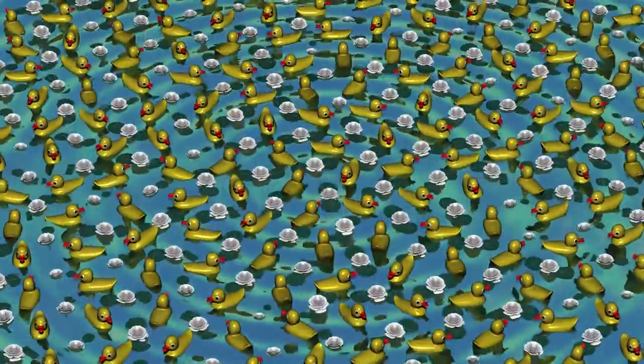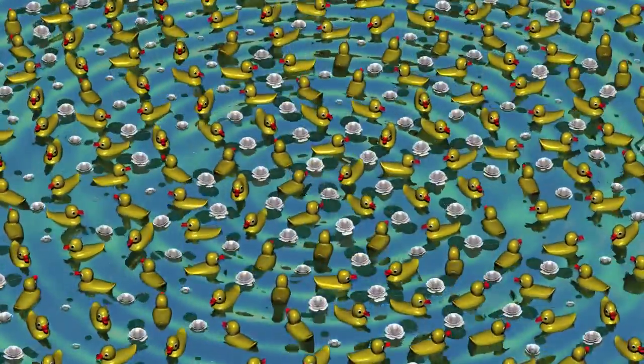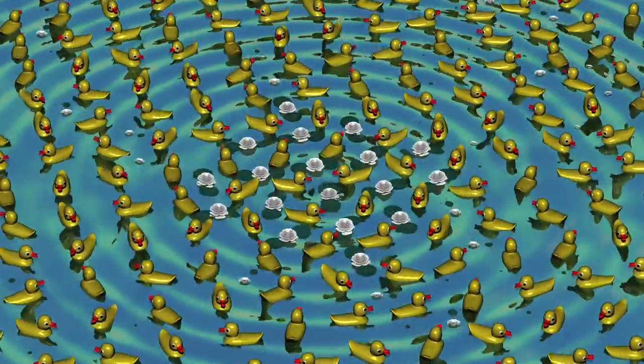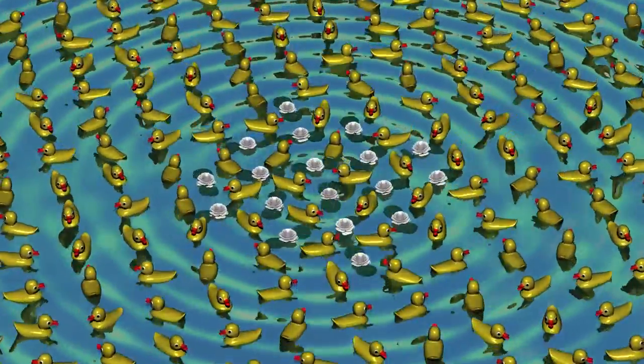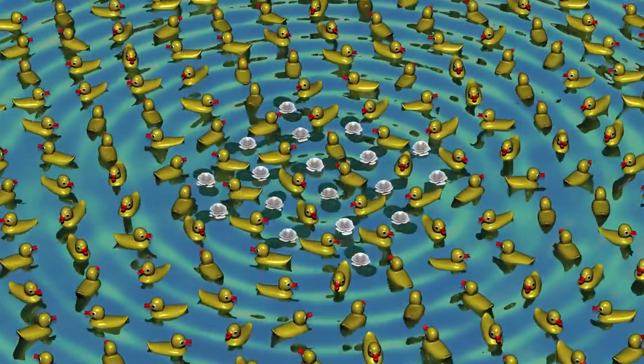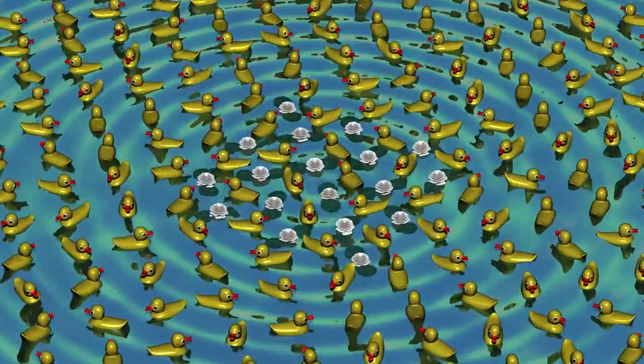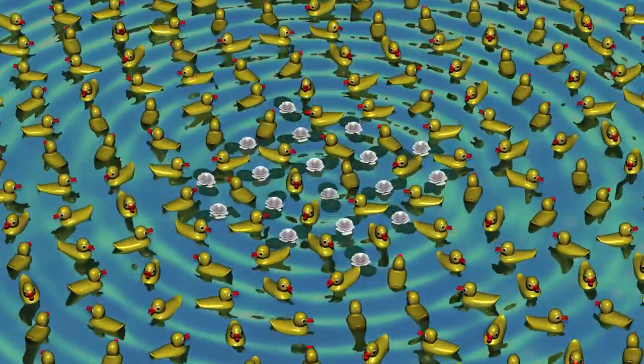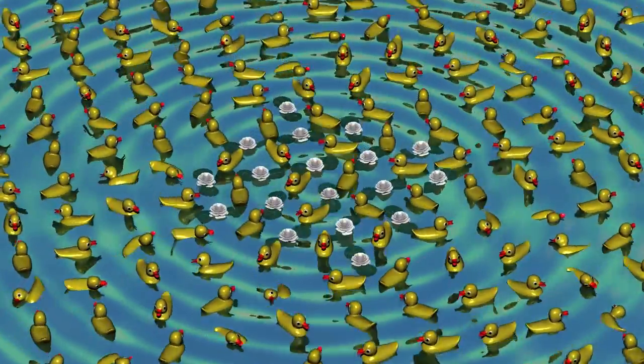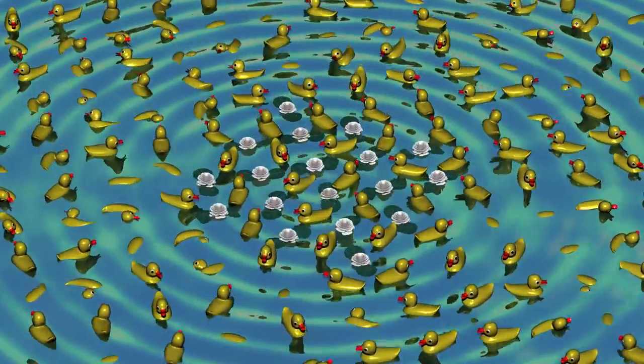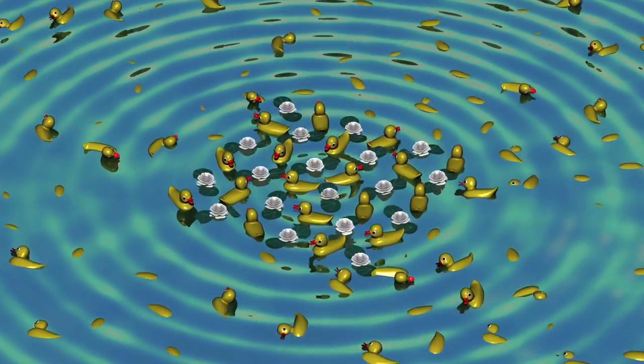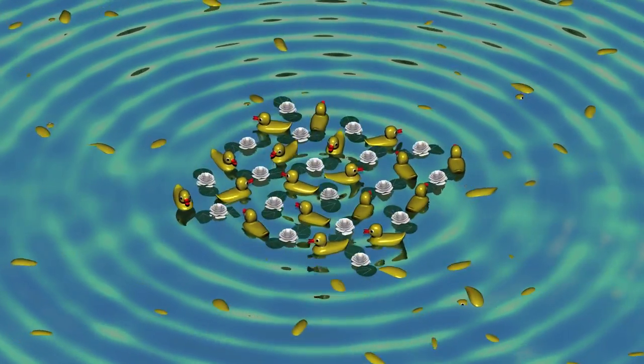But a lot of ducks eat a lot of water lilies. When there are fewer and fewer water lilies, the ducks have less and less to eat and their number decreases. So we have come full circle and can start again.